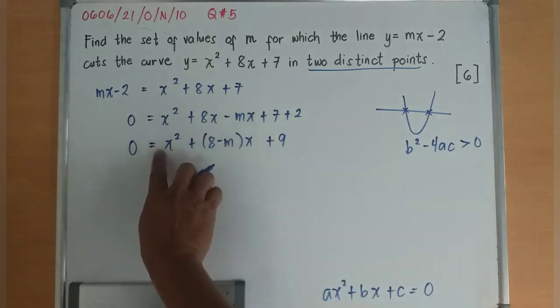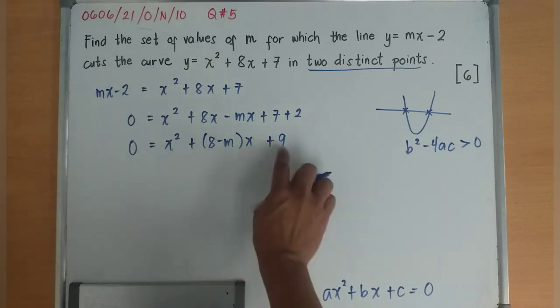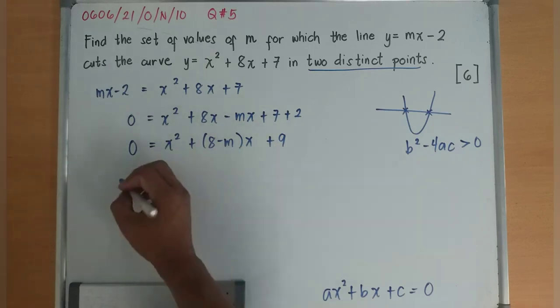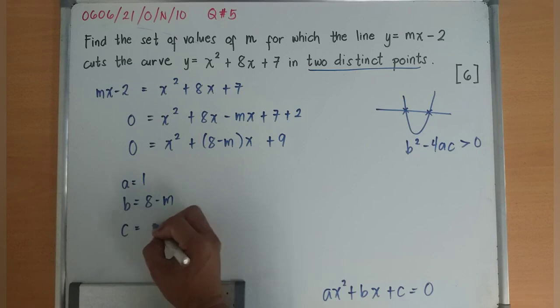Thus, a is 1, b is 8 - m, c is 9. So a is 1, b is 8 - m, c is equal to 9.